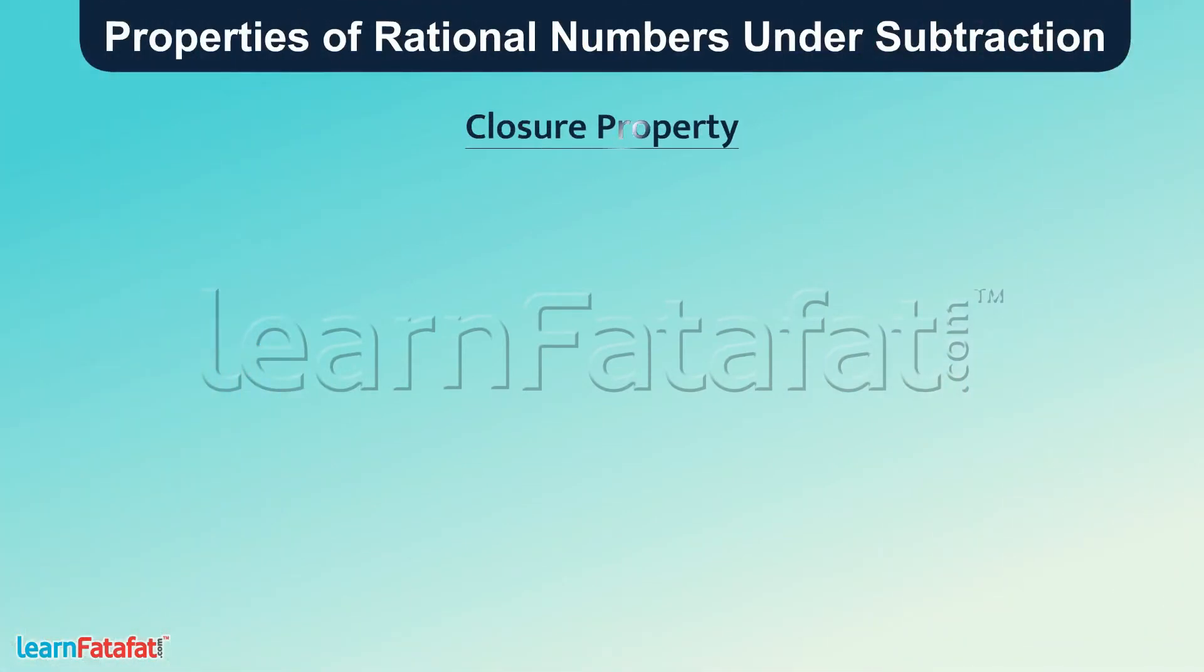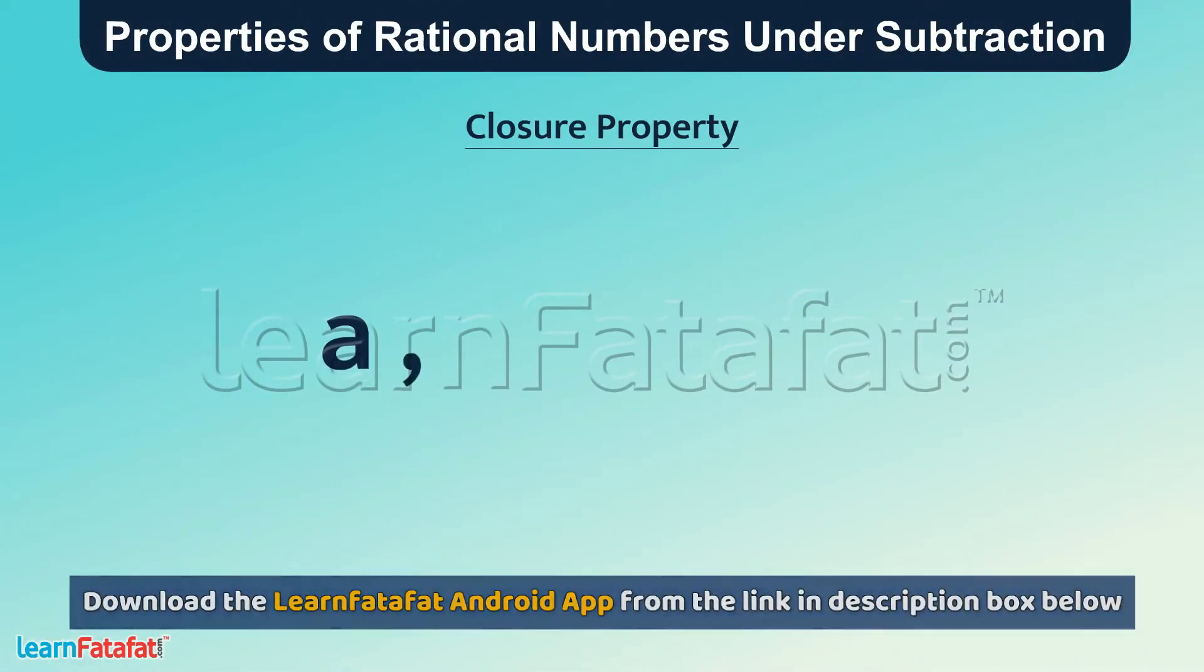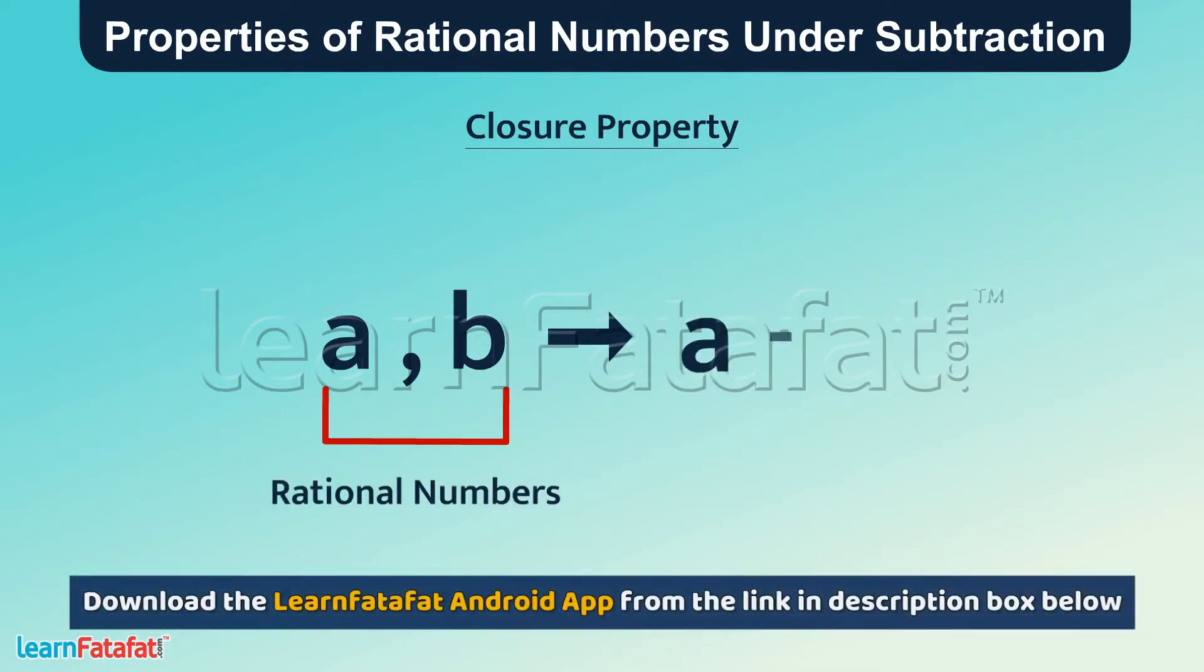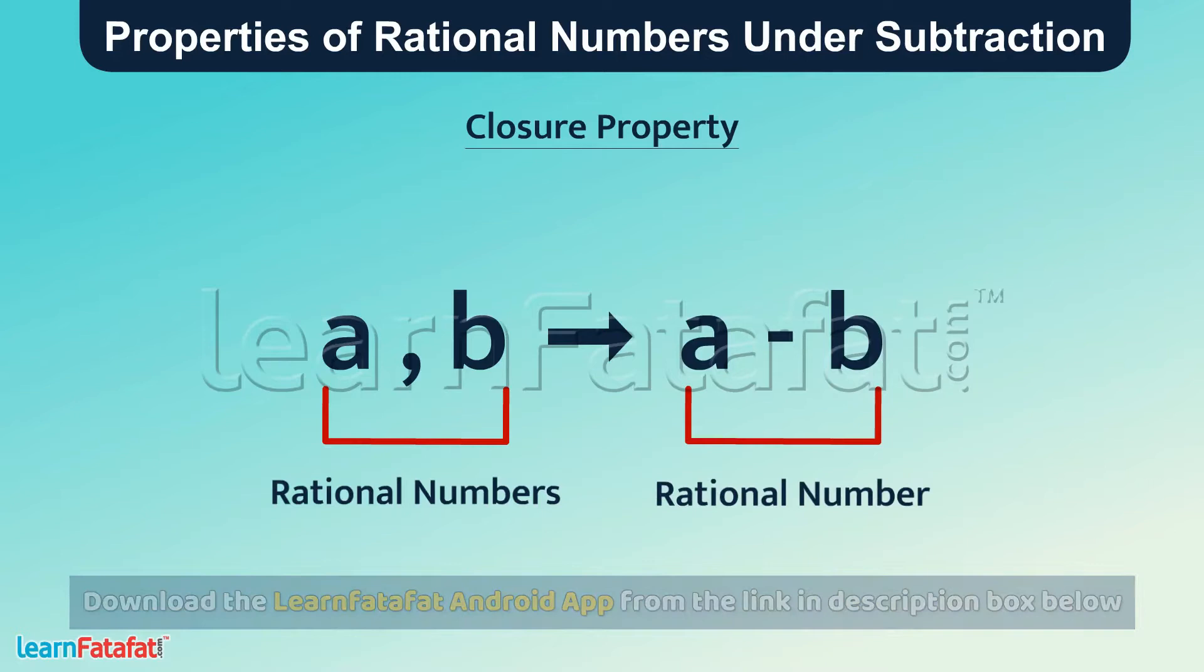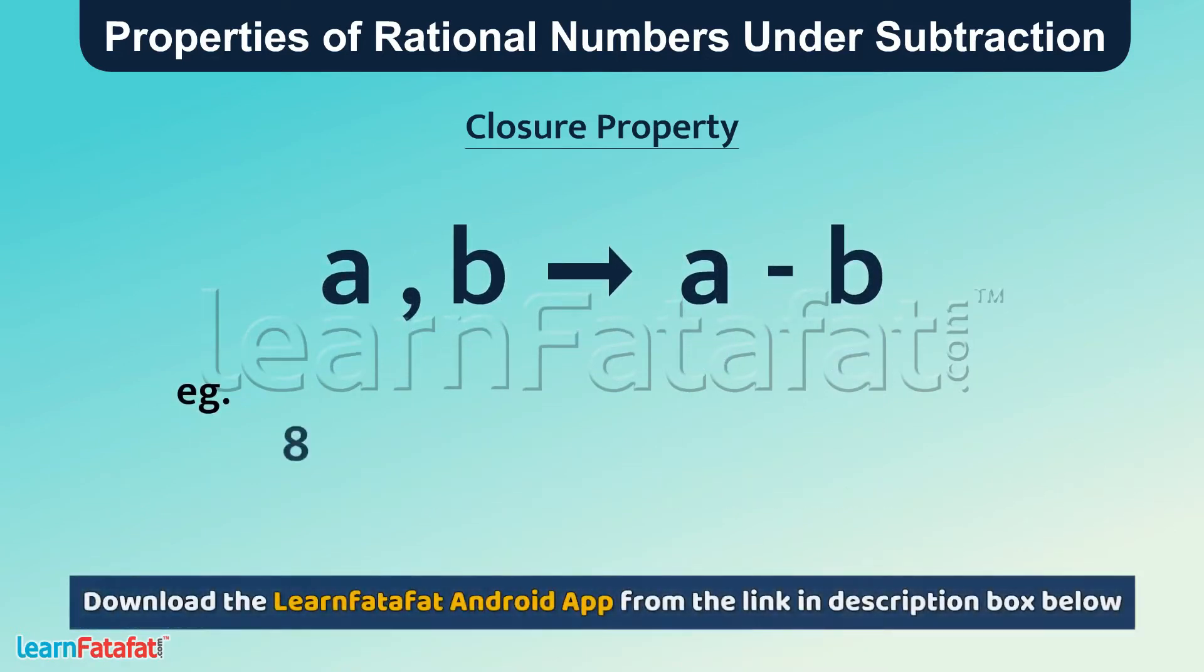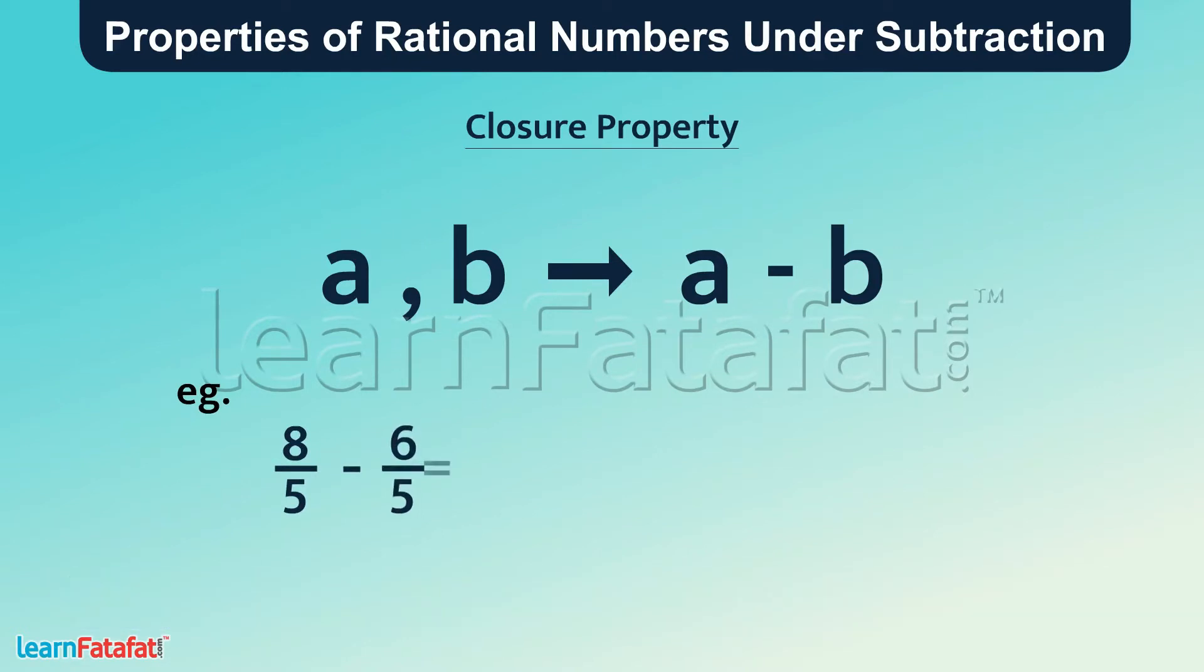Closure Property: If a and b are two rational numbers, then the difference a minus b is also a rational number. For example, 8 by 5 minus 6 by 5 is equal to 2 by 5, which is a rational number.